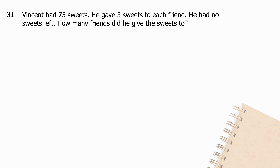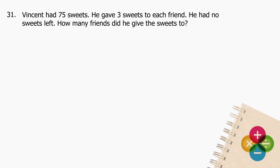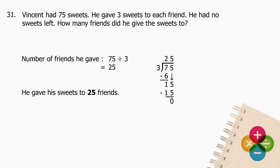Question 31: Vincent had 75 sweets. He gave 3 sweets to each friend and had no sweets left. How many friends did he give the sweets to? Divide 75 by 3 and the quotient is 25. He gave his sweets to 25 friends.